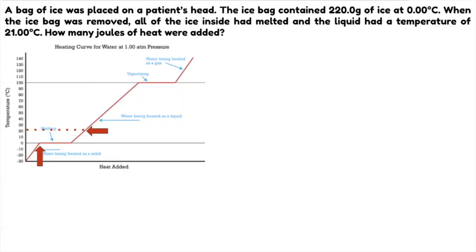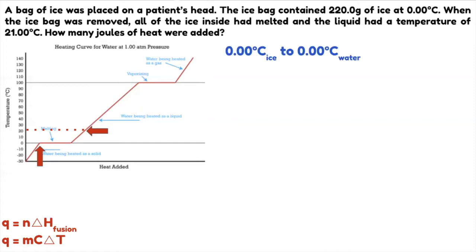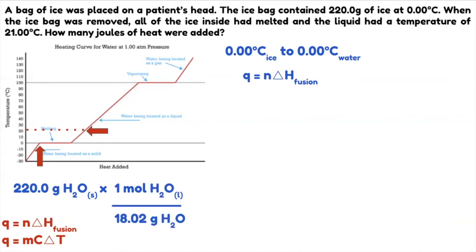Based on the graph, we start at the plateau — where 0 degree ice is changed to 0 degree water. The first step is 0 degree ice to 0 degree water. We need to get the moles of water: 220 grams of water times 1 mole over 18.02 grams of H₂O. Since we want moles, the moles should be in the numerator so the grams cancel.